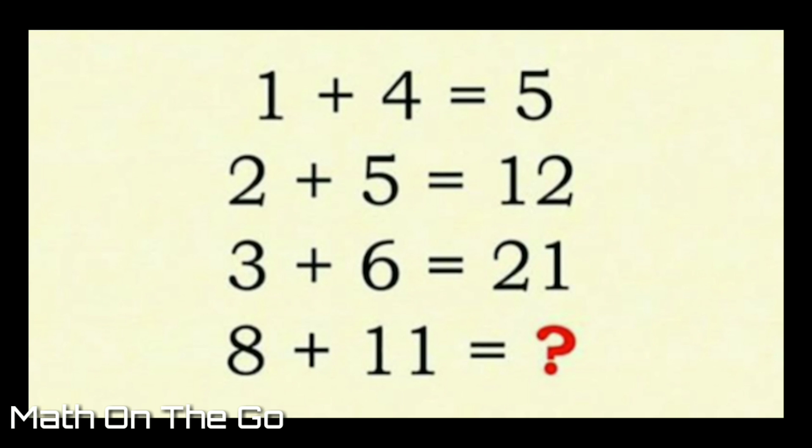Now, on the first one, we got 1 plus 4 equals 5. That makes sense. 1 plus 4 equals 5. But then it starts getting tricky after that.